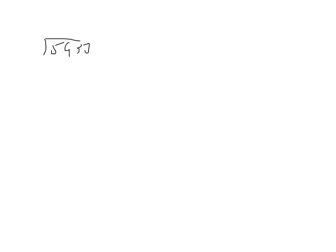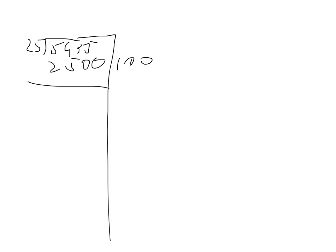So 5935 divided by 25. I know that 100 is an easy number to multiply with any number, so I'll start with that. Now I have 3435 left. I also know that 100 can fit into 3435 — another 100 groups of 25 can fit in 3435.